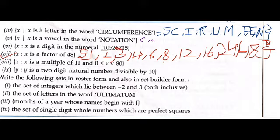Next is x where x is a multiple of 11 between 0 and 80. So let's see. We have to include 0 because there's an equal to sign, and it should be less than 80. So what will be the answer?